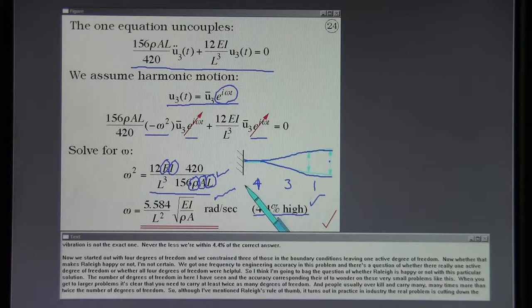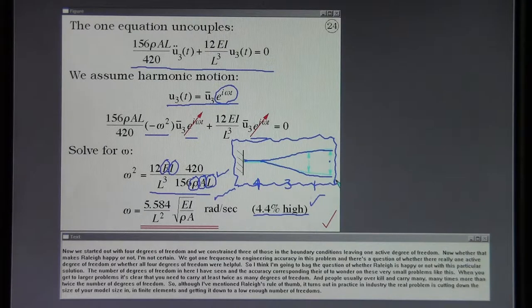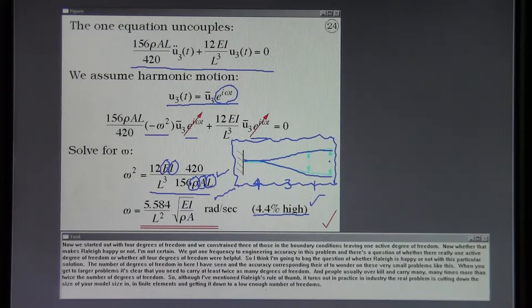The number of degrees of freedom in here and the accuracy corresponding thereof can wander on these very small problems like this. When you get to larger problems, it's clear that you need to carry at least twice as many degrees of freedom. People usually overkill and carry many, many times more than twice the number of degrees of freedom. Although I've mentioned Rayleigh's rule of thumb, it turns out in practice and industry, the real problem is cutting down the size of your model in finite elements and getting it down to a low enough number of degrees of freedom.